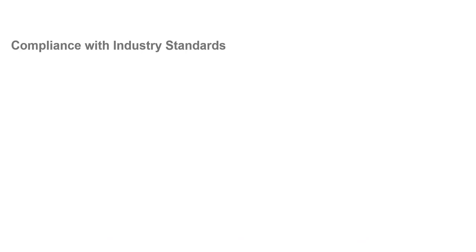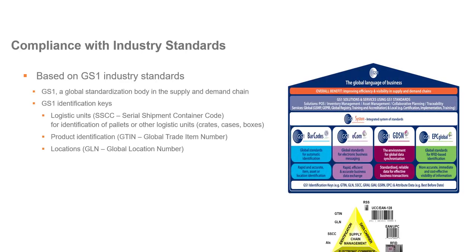An important aspect of Produmex WMS for SAP Business One is that it complies with GS1 industry standards. GS1 is the global standardization body in the supply and demand chain, which has defined identification keys for logistic units — including the SSCC or Serial Shipment Container Code for pallets, the GTIN or Global Trade Item Number for products, and the GLN or Global Location Number for locations.